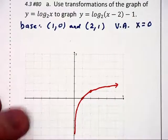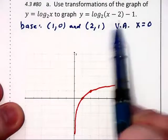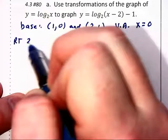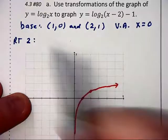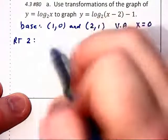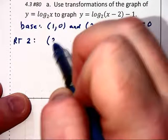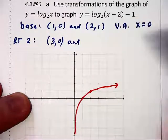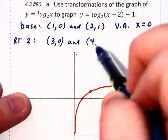Now, let's look at the transformations. Within the parentheses, you have an x minus 2, and that's going to say move our graph right 2. That takes our base graph of 1, 0, or base point of 1, 0, moving it 2 to the right, we get 3, 0. And 2, 1, if you move it 2 to the right, becomes 4, 1.